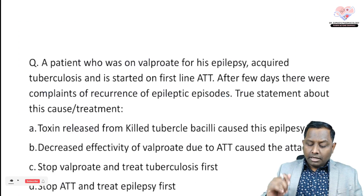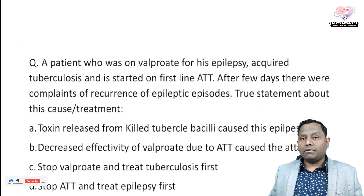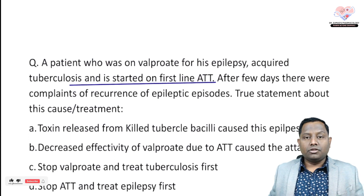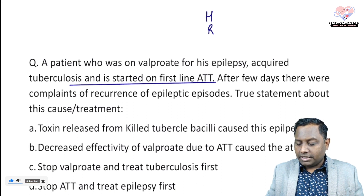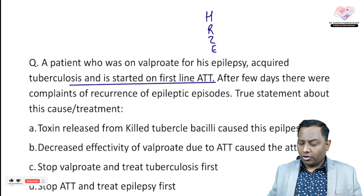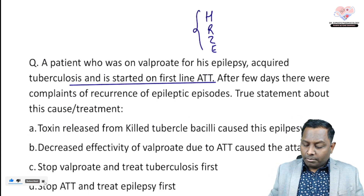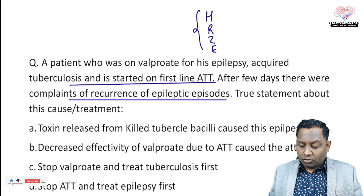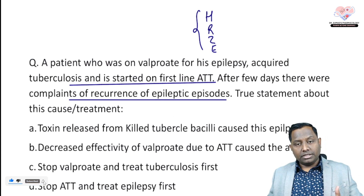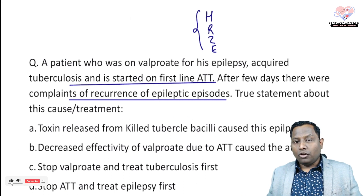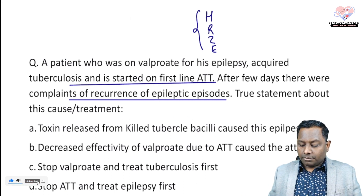Second question: a patient on valproate for epilepsy acquires tuberculosis and is started on first-line ATT — HRZE: isoniazid, rifampicin, pyrazinamide, ethambutol. After a few days, there are complaints of recurrence of epileptic episodes. What is the true statement about this case?